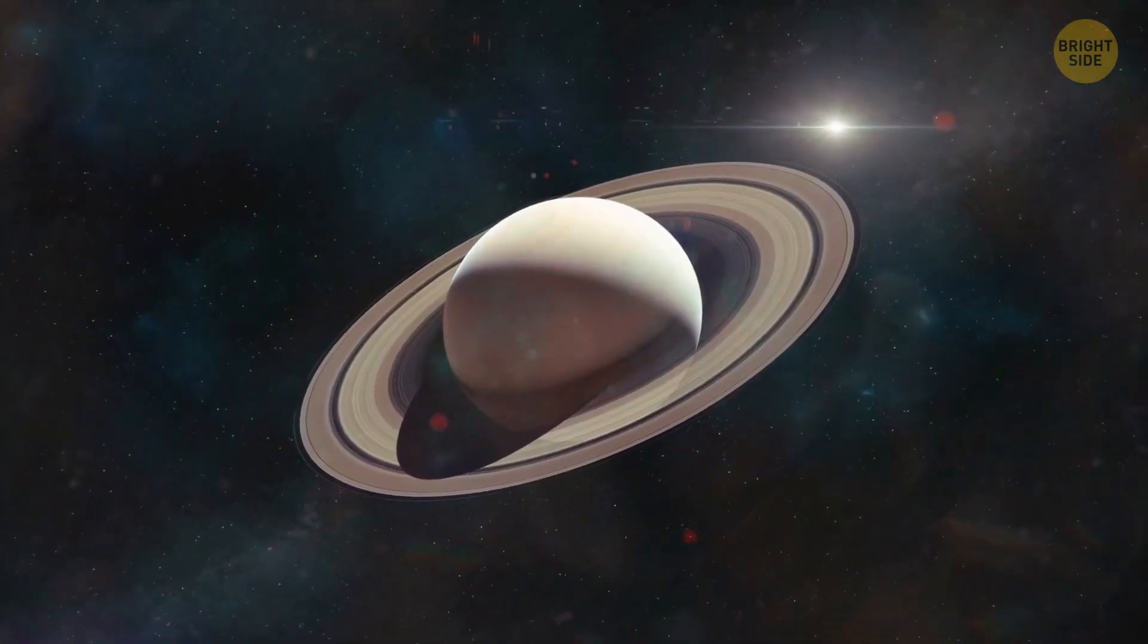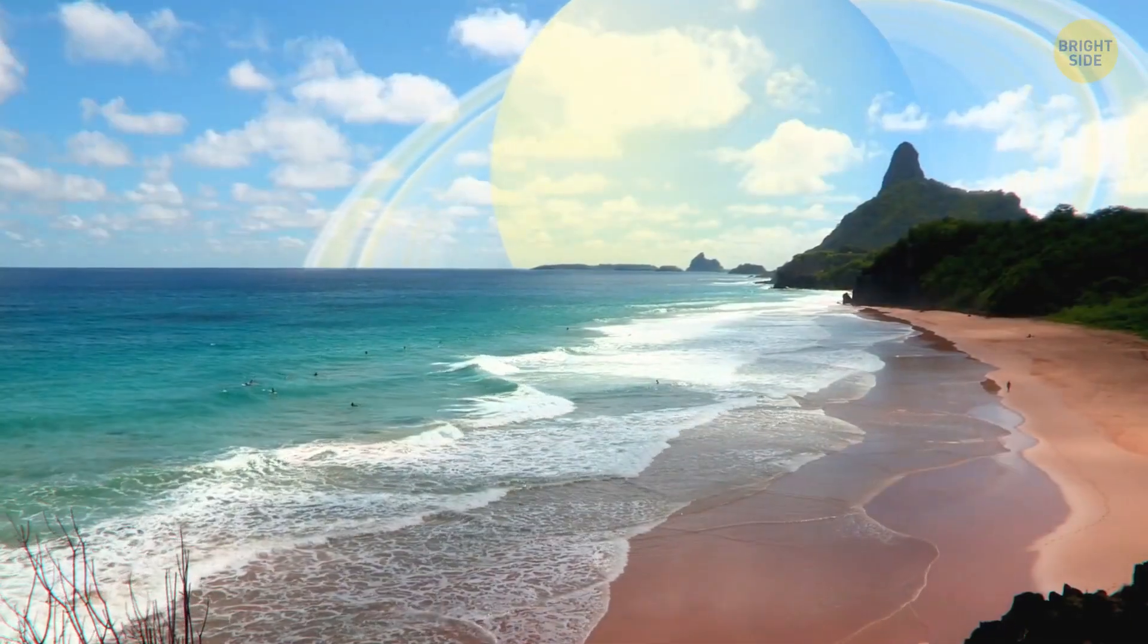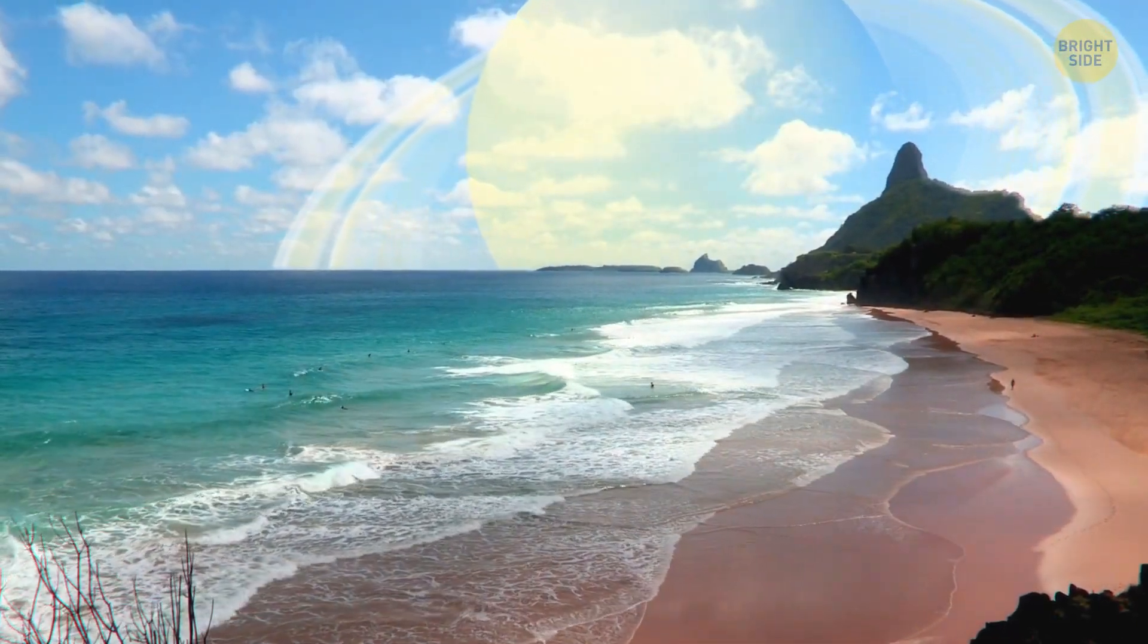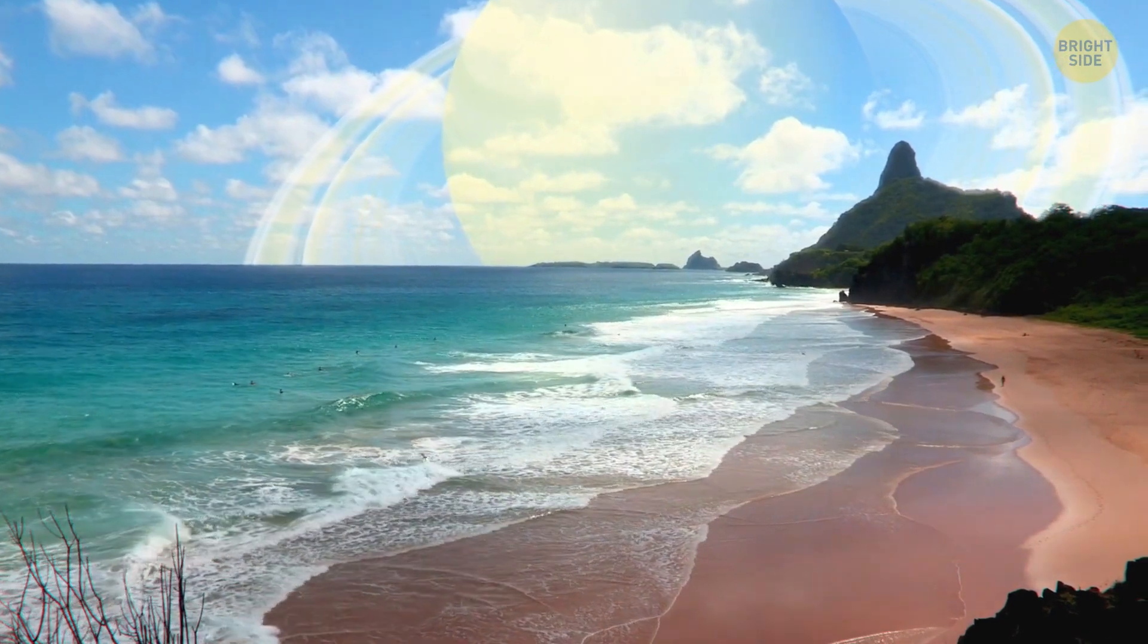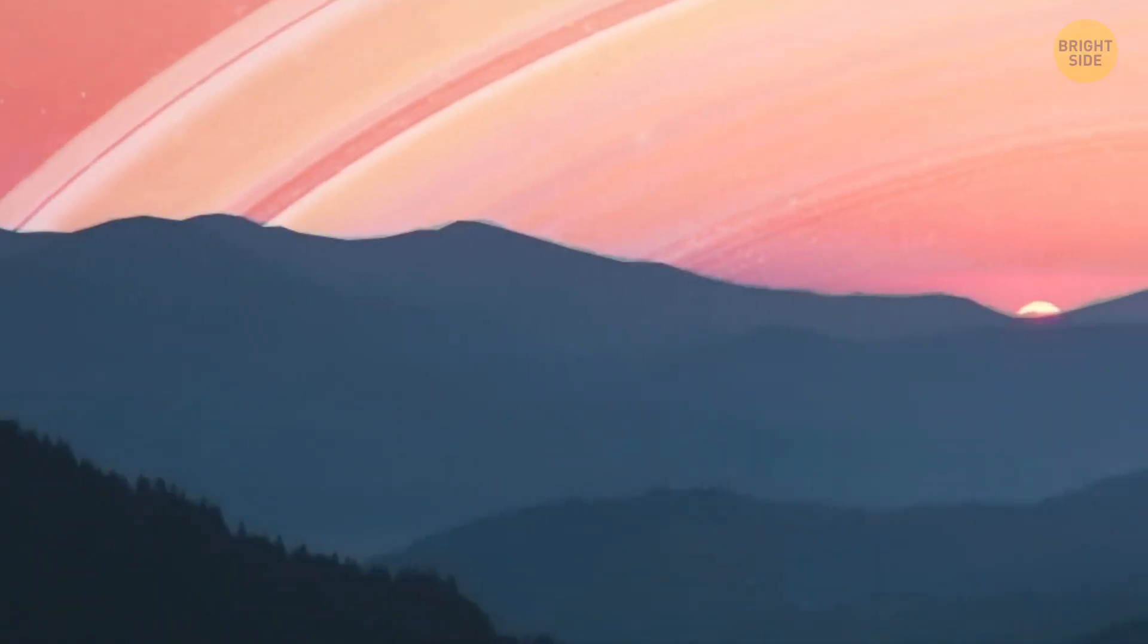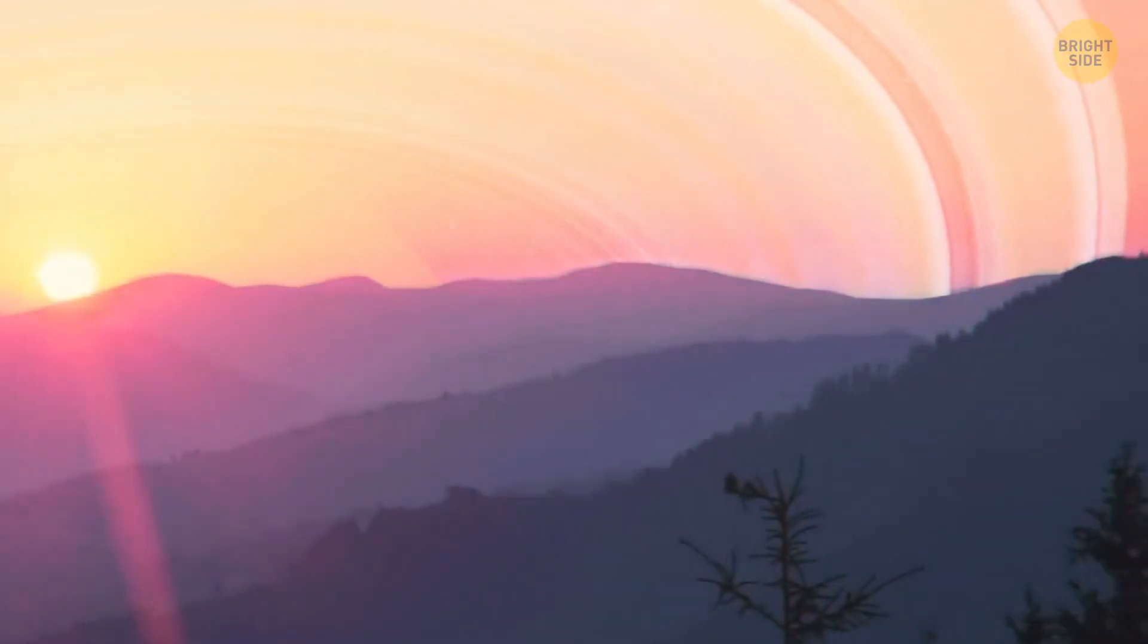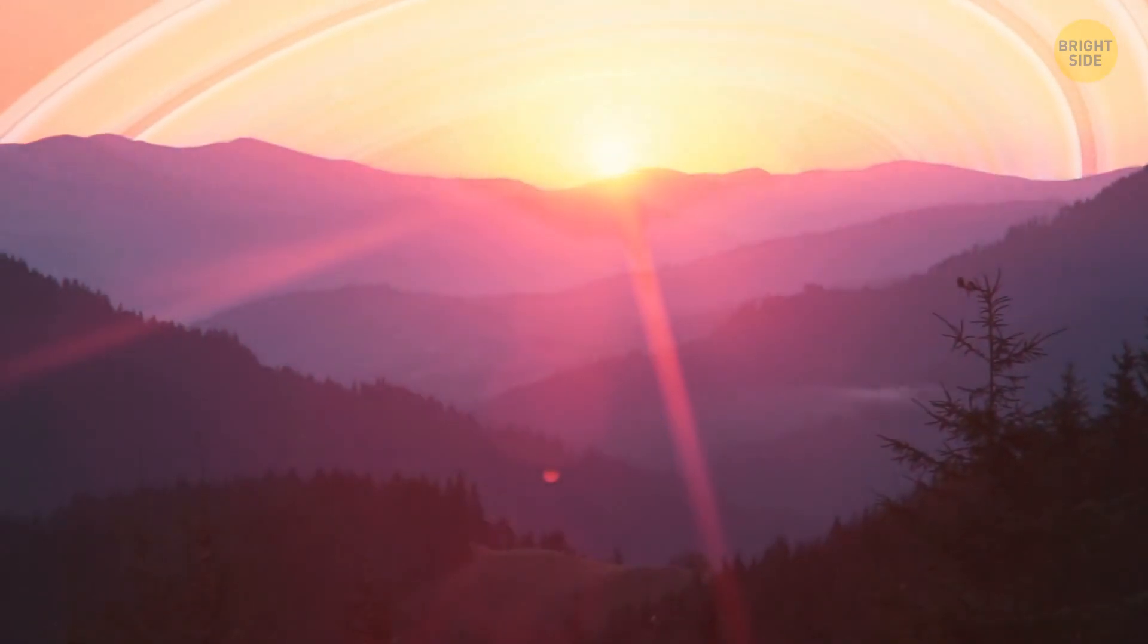Now, if Saturn were to replace the Moon, it would be a sight to behold. The planet is more than 35 times larger than our satellite. It means the giant golden globe would cover 18 degrees of the sky, and its rings would stretch even further, from horizon to horizon. Hey, if you like it, then you should have put a ring on it.